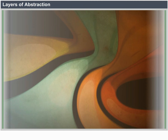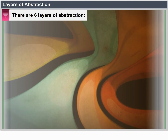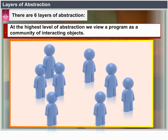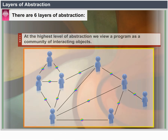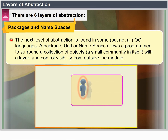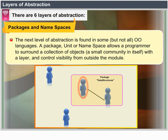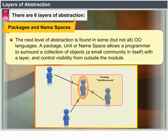Layers of abstraction: There are six layers of abstraction. At the highest level, we view a program as a community of interacting objects. The next level — packages and namespaces — is found in some but not all object-oriented languages. A package unit or namespace allows a programmer to surround a collection of objects with a layer and control visibility from outside the module.